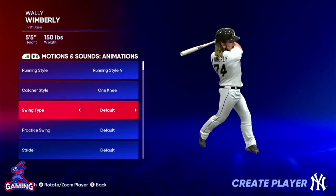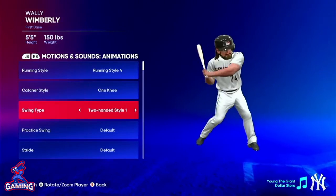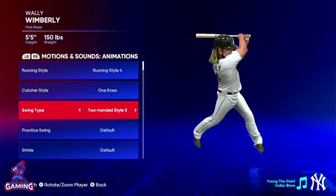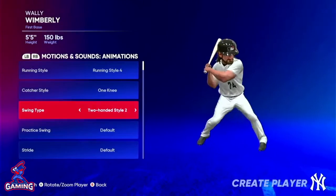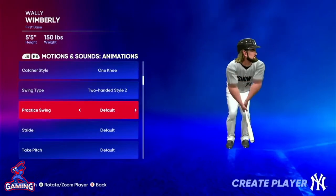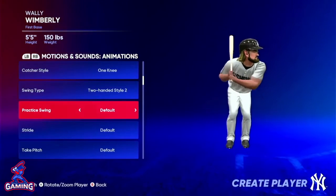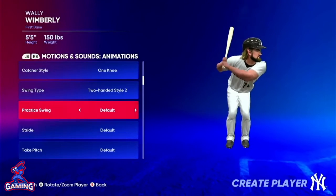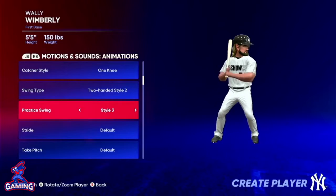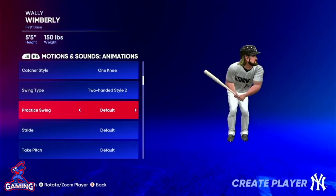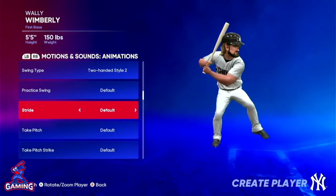Okay, swing type — for Wimberly, Wally Wimberly still going strong. Comes out of his stance: one-handed styles, two-handed styles — there's a bunch — and the default. Let's pick... oh, that looks awkward. Let's do the awkward one. His 'I gotta go to the bathroom' batting stance is my favorite thing ever right now. Practice swing — during gameplay you can hit X or B before the pitcher selects their pitch, and this is where the animation comes in. Style two, style three — that's not bad. This is more like an Anthony Rizzo. This just doesn't get better than that.